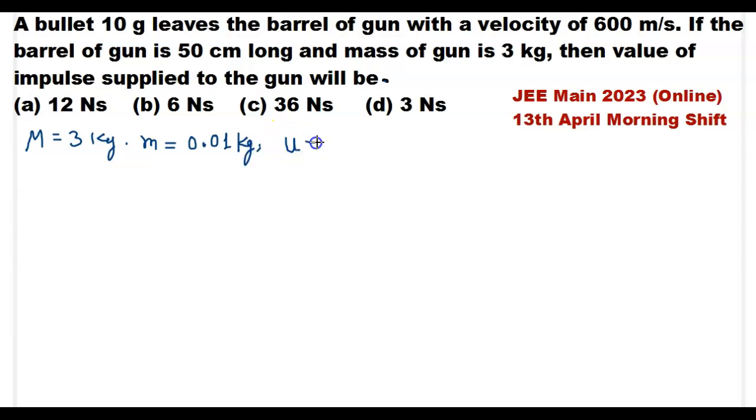The speed of the bullet U is equal to 600 meter per second, and the length of the barrel gun L is equal to 60 centimeter.